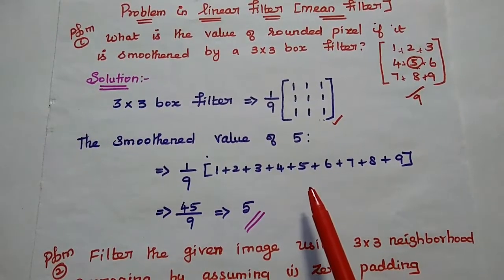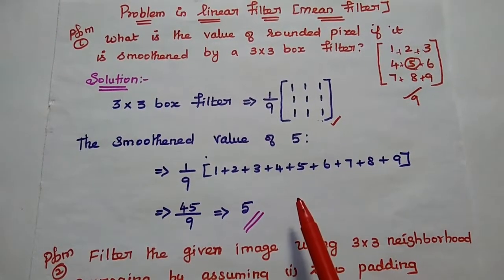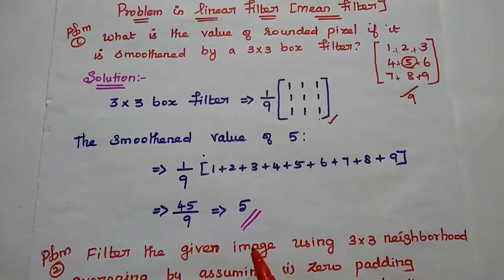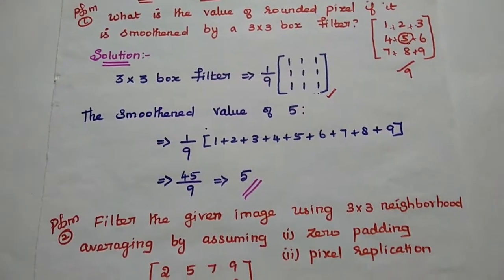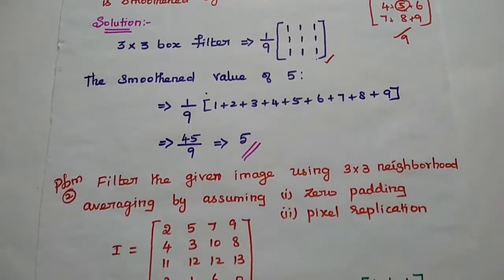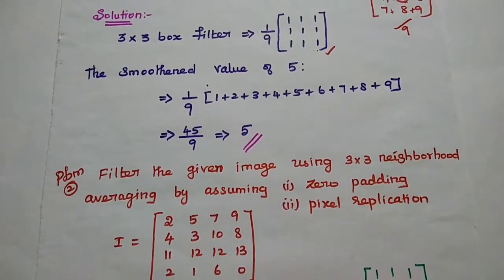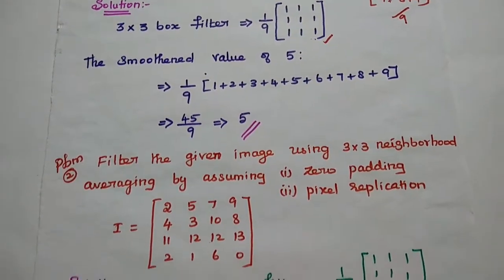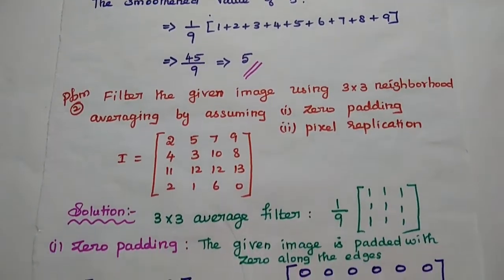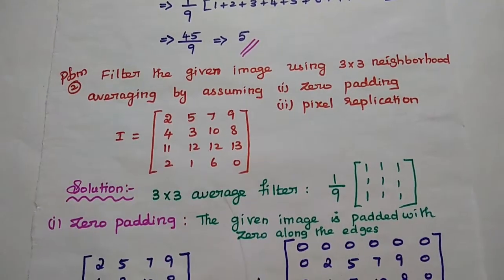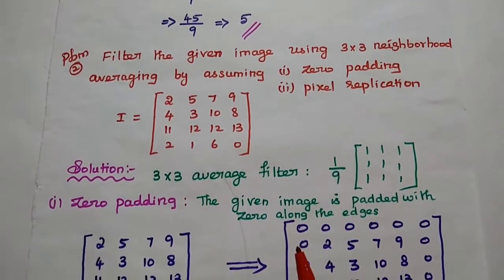That is the smoothened value of pixel 5. This is what mean filter or averaging filter means. This is a kind of 2-mark question. Next we are going to solve one important big question.